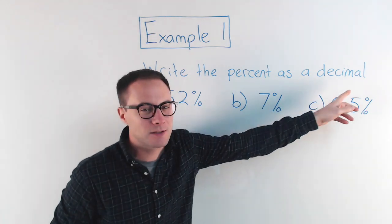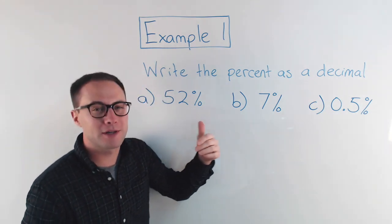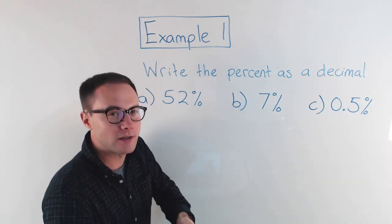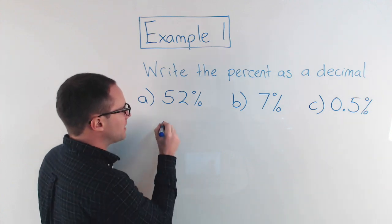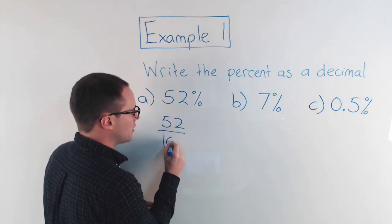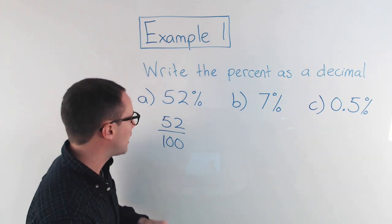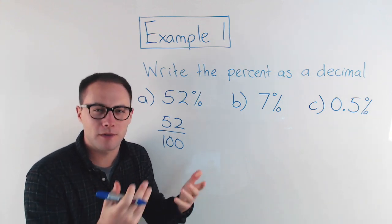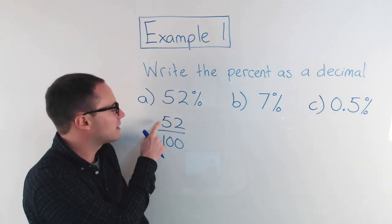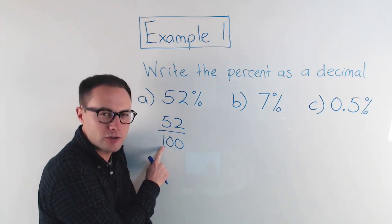So if I'm looking at this example — write the percent as a decimal — for part a, 52%, I can write that as 52 per 100. That just means 52 over 100. And hopefully you remember that with a fraction, this line just means division. I can think of this as 52 divided by 100.